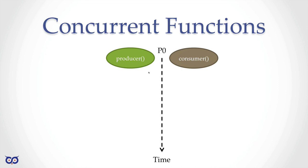Not only do I need to write my code so that anything the consumer does doesn't manipulate or trip up the producer in a negative way and vice versa. For example, if my producer is writing into an array and I stop it to let my consumer consume some data, it's possible my consumer might try to access or manipulate the array in a way that hurts how the producer produces information, or causes the producer to incorrectly start writing at the wrong location.